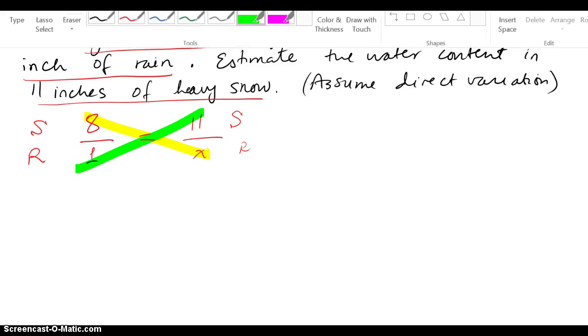I'm going to do the cross product. That's going to give me 8x equals 11. Divide by 8. X looks like it's 1.375. So our answer is 1.375 inches of rain is what we get equivalent for those 11 inches of heavy snow.